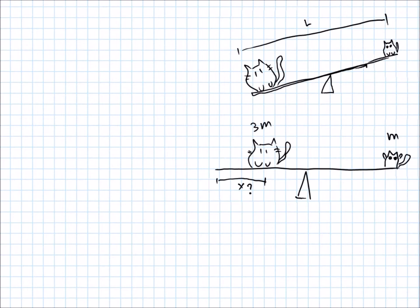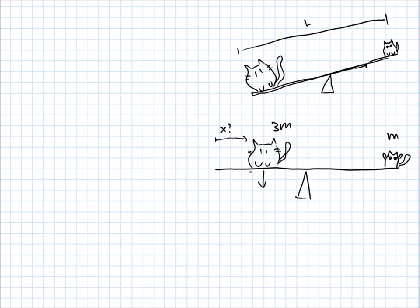All right, so this is a torque problem. It's a torque problem, so what we want is a free body diagram. We have a force here of 3m times g—the force of gravity. His mass is 3m times g, which makes his force of gravity. And here we have a force of just m times g.